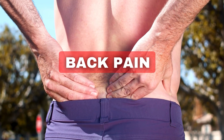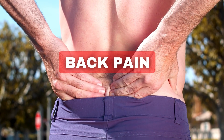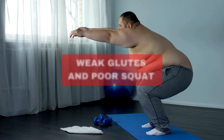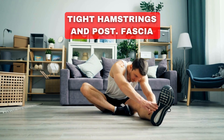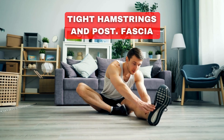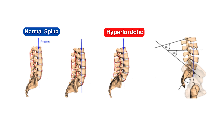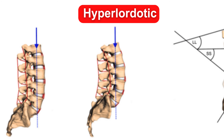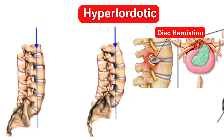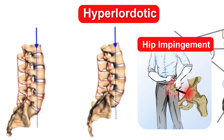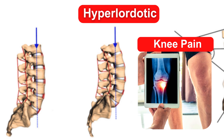Symptoms include chronic lower back pain, hip stiffness, and weak glutes leading to poor squat, tight hamstrings, and posterior fascia. If you look at the biomechanics, the line of gravity passes more posteriorly in a hyperlordotic spine. This can lead to complications such as disc herniation, hip impingement, and knee pain.